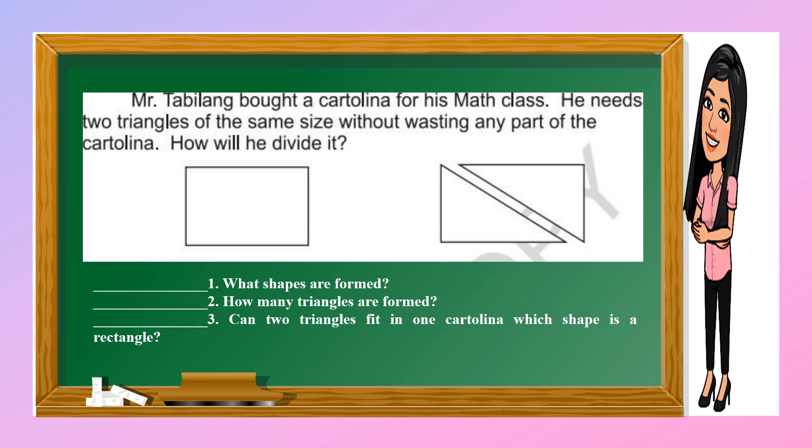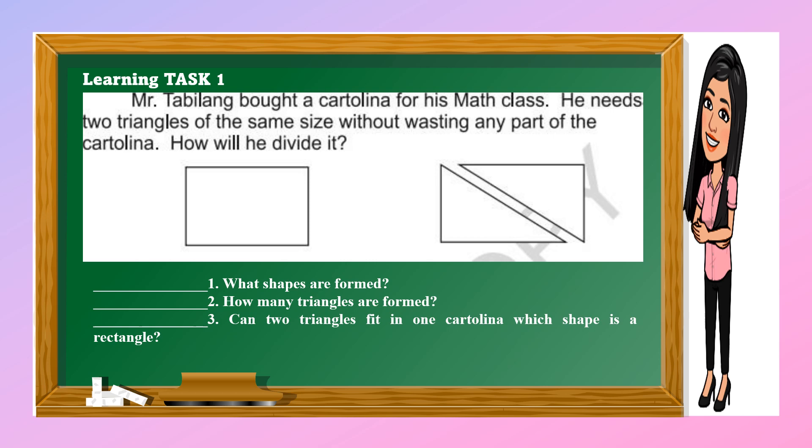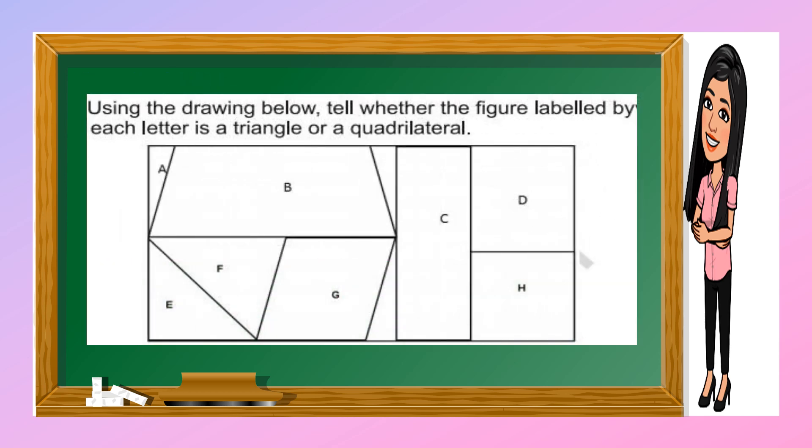For your learning task one, you're going to answer these three questions from the illustration. For learning task two, using the drawing, you're going to identify if the figure is quadrilateral or triangle.